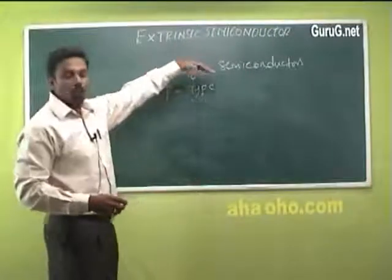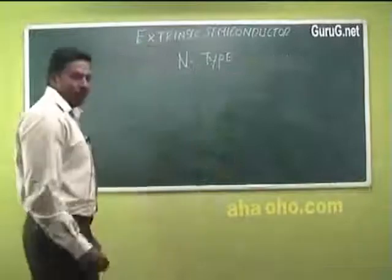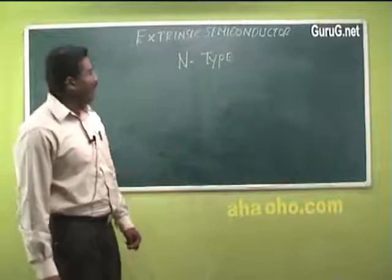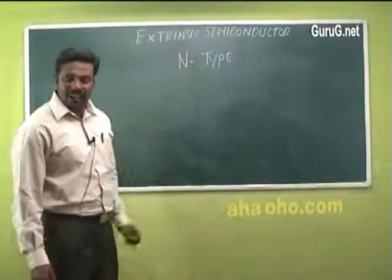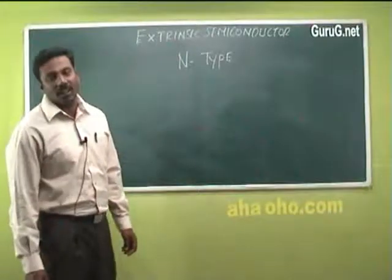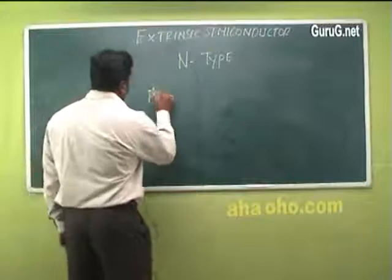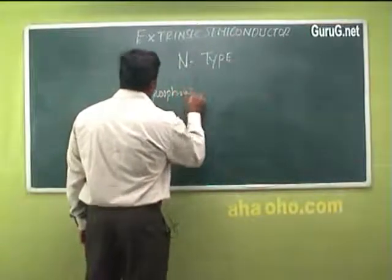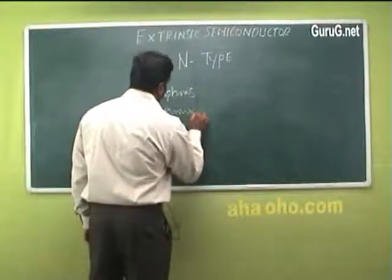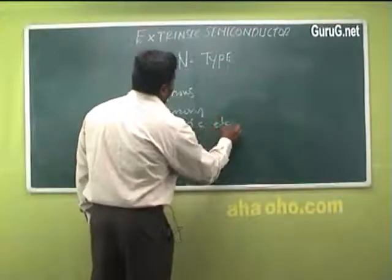To obtain an n-type semiconductor, the pure intrinsic semiconductor is doped with a pentavalent element such as phosphorus, antimony, arsenic, etc.